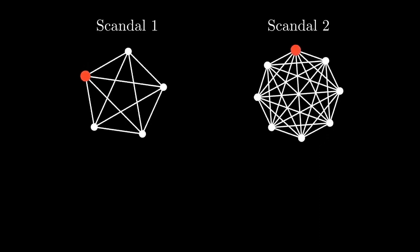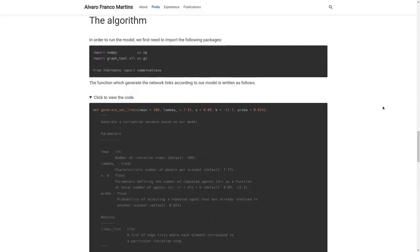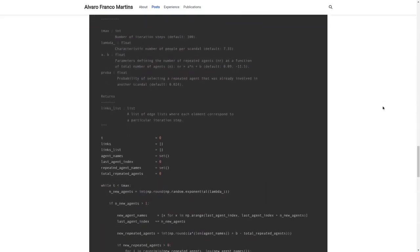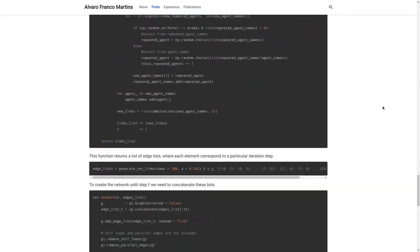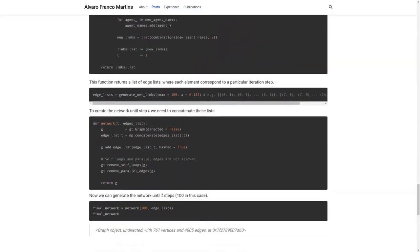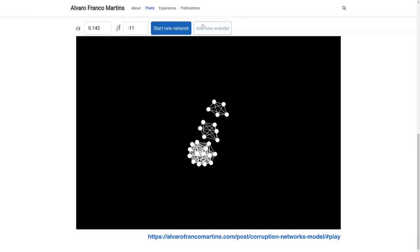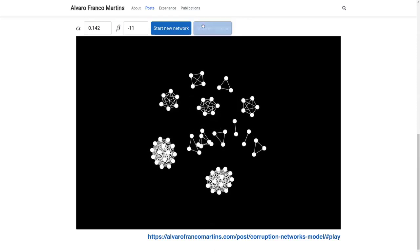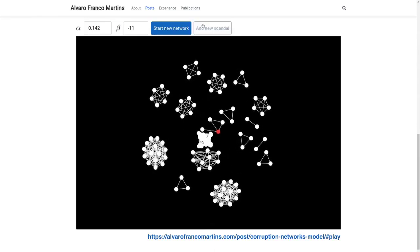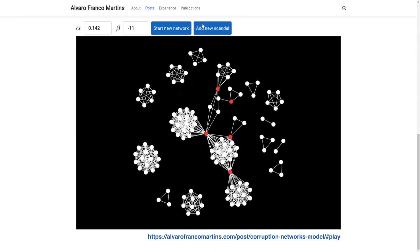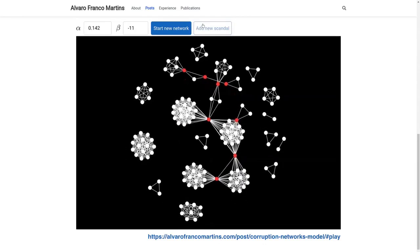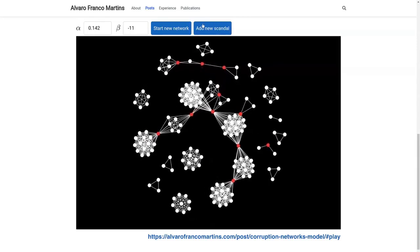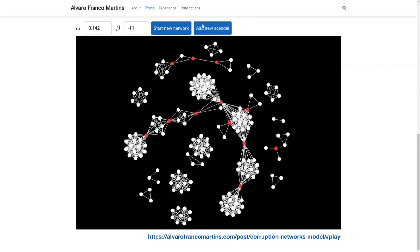And to figure out just how important these recidivists are, the researcher actually simulated the growth of these networks. Wait, how do you even simulate something like that? It gets pretty wild. It involved a lot of complex math, computer modeling, all that. But basically they created this system where they could create these virtual agents, and these agents could interact, make connections based on certain rules. So like a corruption simulator. Basically. And one of the things they could control in this simulator was the rate of recidivism - how likely these agents were to go back to their corrupt ways, to get involved in another scandal after the first.